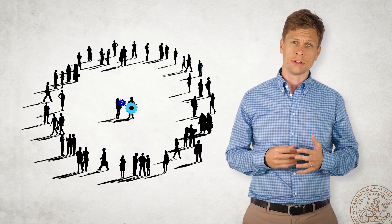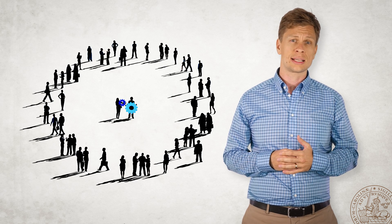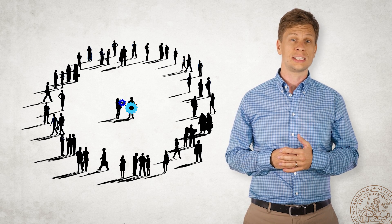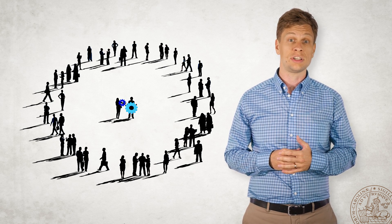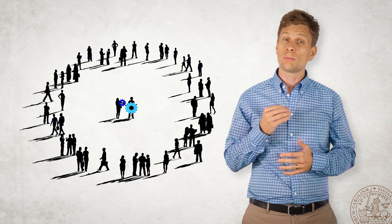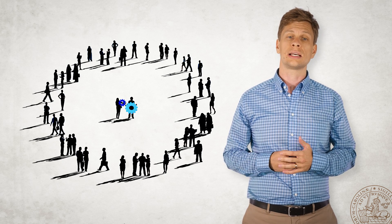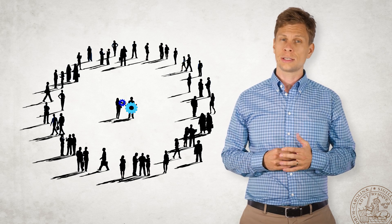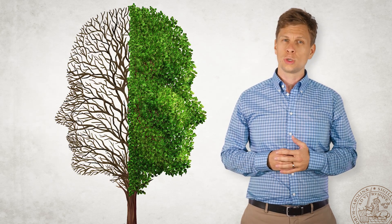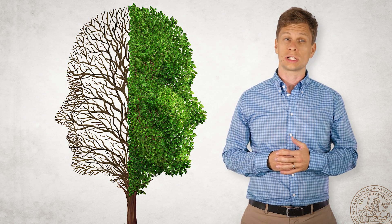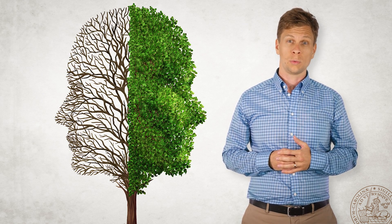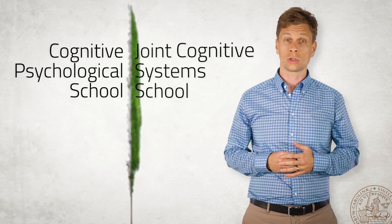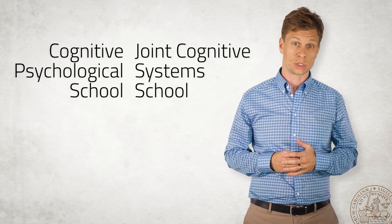Soon after the Three Mile Island accident, several academic conferences gathered the scientific elite of safety science and error studies to specifically discuss the problem of human error. And soon, two highly different schools of thought emerged. We can call them the Cognitive Psychological School and the Joint Cognitive Systems School.